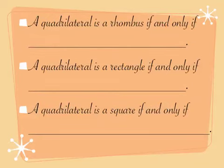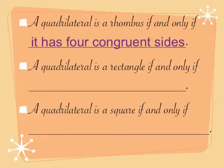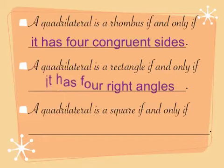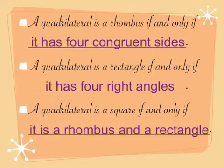Some corollaries: a quadrilateral is a rhombus if and only if it has four congruent sides. A quadrilateral is a rectangle if and only if it has four right angles. And a quadrilateral is a square if and only if it is a rhombus and a rectangle — meaning it has four congruent sides and four right angles. If a shape has four congruent sides, it's a rhombus; if it has four right angles, it's a rectangle.